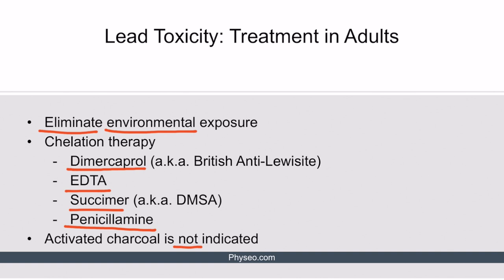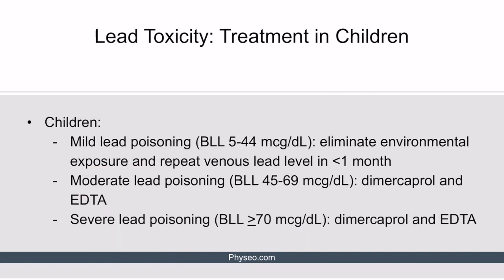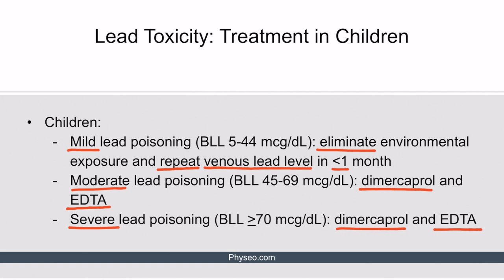Treatment of lead toxicity in children depends entirely on the venous blood lead level. With mild poisoning, recommend eliminating the potential source of lead exposure and repeat a venous lead level in less than a month. With moderate poisoning, the current recommended treatment is dimercaprol and EDTA, although succimer may also be listed as correct on examinations. For severe poisoning, use dimercaprol and EDTA. It's important to memorize the blood lead levels associated with mild, moderate, and severe lead poisoning as they guide appropriate treatment.